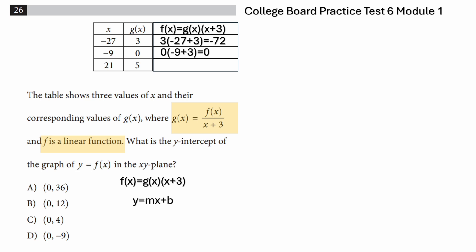When x = -9, you plug in the value of g(x), which is 0, times -9 + 3, f(x) = 0. When x = 21, g(x) is 5. So you plug in the values, you get f(x) = 120.